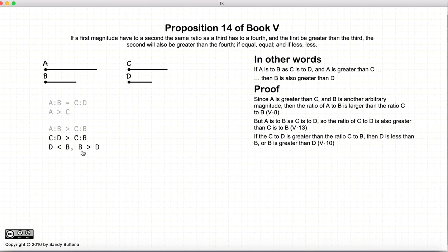Or inversely, b would be greater than d. So what we have, if we start with our two ratios, a to b is equal to c to d, and a is greater than c, we have just shown that b must also be greater than d.